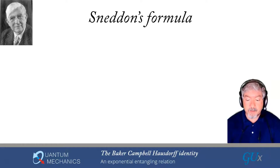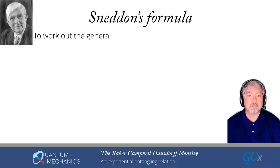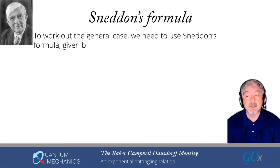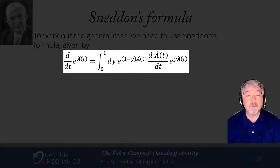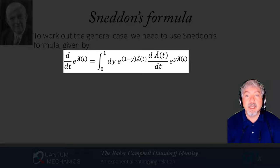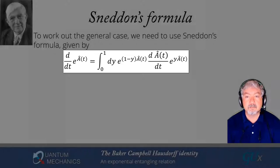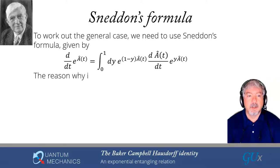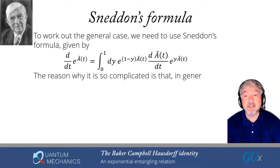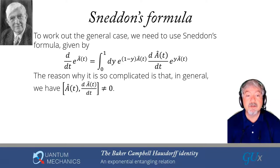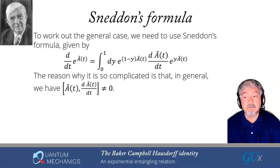To derive the general BCH formula, we first need to work on Sneddon's formula. Ian Sneddon was a famous mathematician. Sneddon's formula looks complicated: the derivative of e^{A(t)} is the integral from 0 to 1 of dy e^{(1−y)A(t)} (dA/dt) e^{yA(t)}. The reason for this complexity is that, in general, A(t) does not commute with dA/dt.